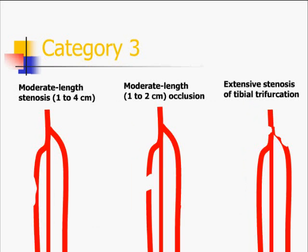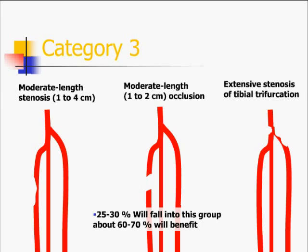Category 3 is a lesion where the length of stenosis is longer — one to four centimeters — or a short occlusion of one to two centimeters, or extensive stenosis of the tibial trifurcation. Again, about 25 to 30 percent of patients will come to us for revascularization, and about 60 to 70 percent of them will actually benefit from the procedure.